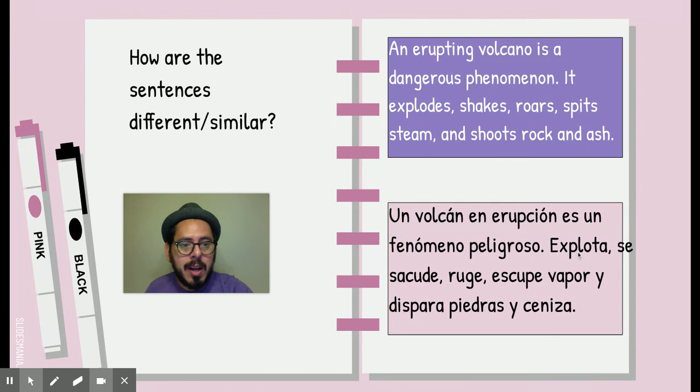Y luego, fíjense aquí. Dice it explodes. Y acá dice explota. Para acá necesitamos un pronoun, un pronombre personal. Y acá no. Acá nada más decimos explota. Y diferente con shakes. En shakes solo basta decir shakes para saber que está temblando. Y aquí tenemos que decir se sacude. No podemos decir sacude solo, porque no estamos diciendo que sacude. Se sacude, tenemos que decir.